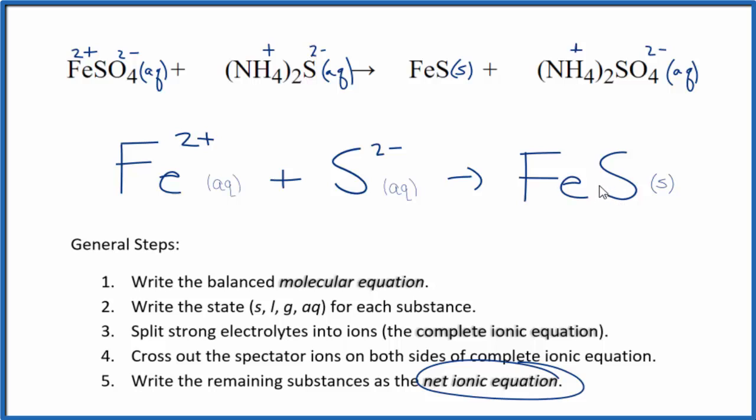So that's it. This is Dr. B with the net ionic equation for FeSO4 plus (NH4)2S. And remember that this FeS, with a little S after it, that's our solid. That's our precipitate. Thanks for watching.